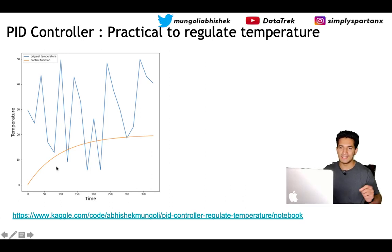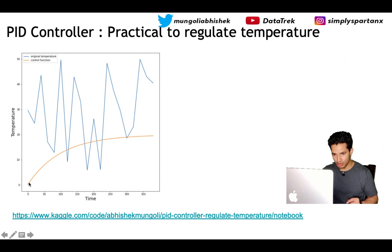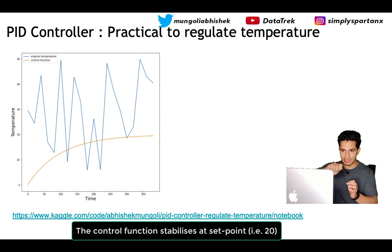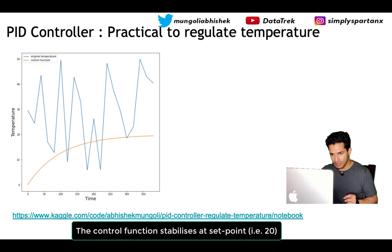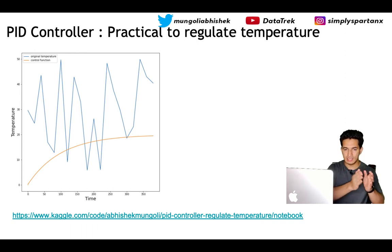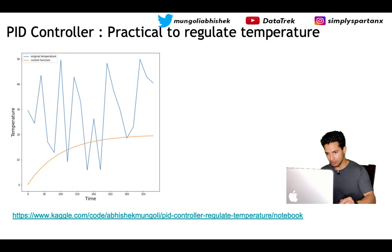Now we will do a practical exercise. I have simulated temperature — you can see it is fluctuating a lot — but we have set the target value to 20. We start with u(t) of zero because we don't know how to control the temperature, and we adjust the control knob depending on the error. After some time the error function stabilizes at 20, achieved purely by modeling on the error at times t, t-1, and t-2.